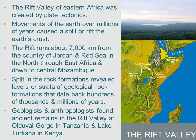The Rift Valley of Eastern Africa was created by plate tectonics. There are various movements which happen at the surface of the earth, and when those movements happen in the crust, they lead to certain kinds of changes in landforms. One such change in landform is the Rift Valley. The name itself gives you an idea that something has split.